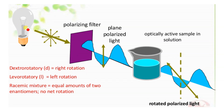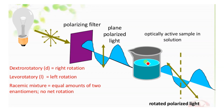Here is how the PPL apparatus works: monochromatic light (single color) moves in all directions. When it passes through a polarizing filter (Nicole prism), all the light becomes unidirectional — that is called plane polarized light (PPL). When this PPL passes through a substance and the substance rotates the PPL to the right, it is called dextrorotatory.